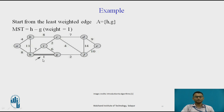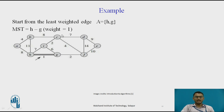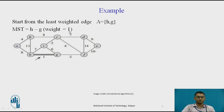I have selected edge of weight 1, which connects H to G, and I have included H and G in my set A. A weight of 1 has been added to my MST, and my MST now has two nodes: H and G.